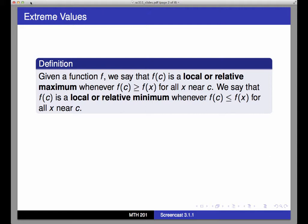Given a function f and a point c in the domain of f, we say that f of c is a local or relative maximum if f of c is greater than or equal to f of x for all x near c. And likewise, f of c is a local or relative minimum if f of c is less than or equal to f of x for all x near c.